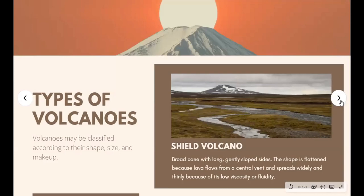Volcanoes may be classified according to their shape, size, and makeup. Shield volcanoes have a broad cone with long, gently sloped sides. The shape is flattened because lava flows from the central vent and spreads widely and thinly due to its low viscosity. It does not build up near the vent, and eruptions are non-violent because of the low viscosity of the lava.